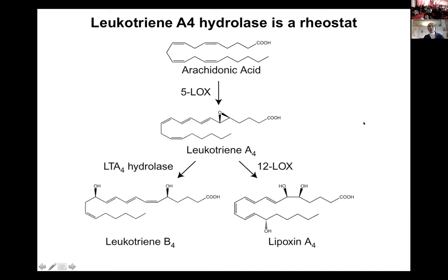The mutant mapped to the arachidonic acid pathway — these are 20-carbon lipids on the membranes of all cells. Specifically, David's mutant mapped to leukotriene A4 hydrolase. He showed that without leukotriene A4 hydrolase, you don't make enough leukotriene B4 and you become susceptible to TB.